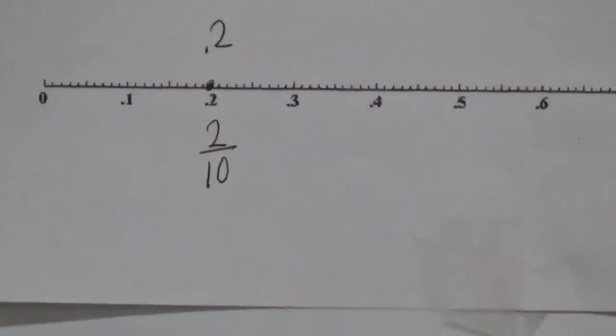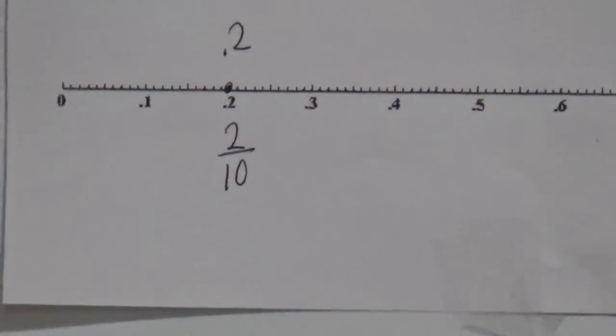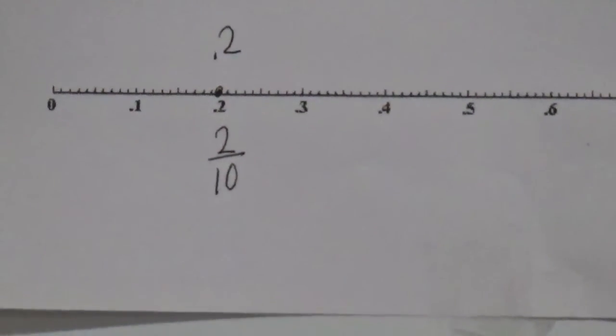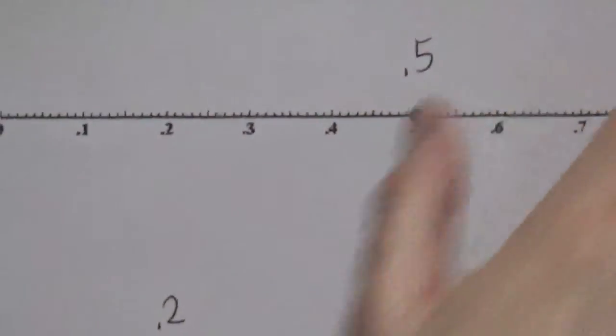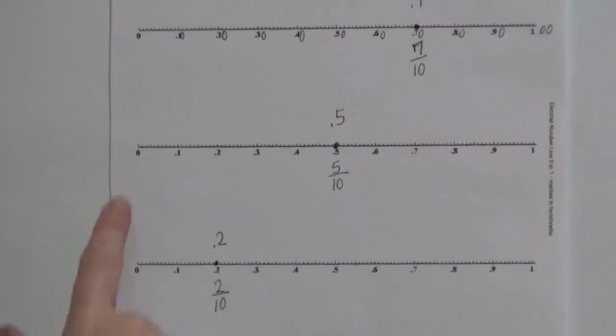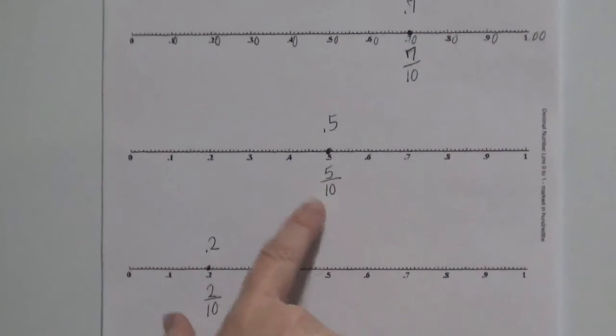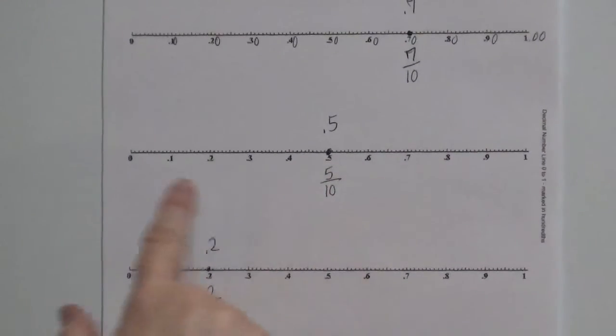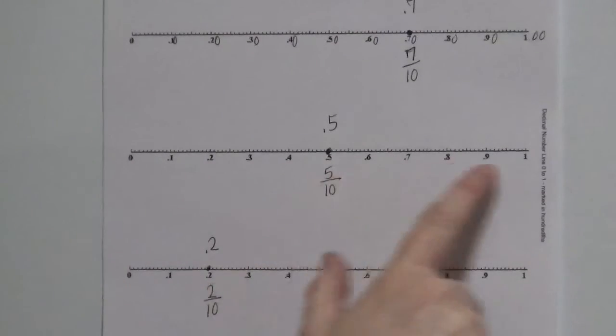And when we look at this, the only thing else that you need to look at is this closer to zero fifty cents or a dollar, seven out of ten is closer to a dollar. For five dimes, five tenths, is it closer to zero, a half, or a dollar? It's close to half of a dollar. And then two tenths, is it closer to zero, a half, or a whole dollar? It's closer to zero.